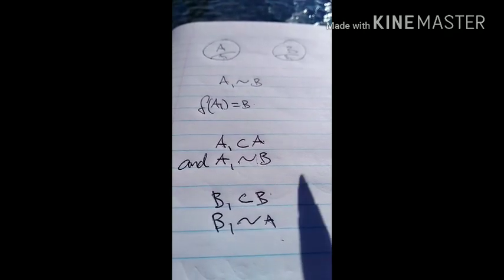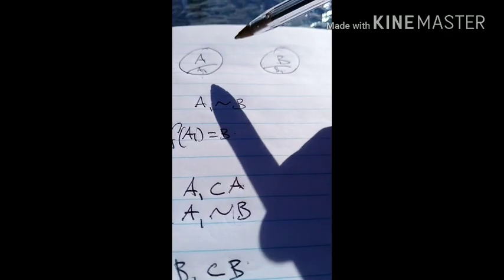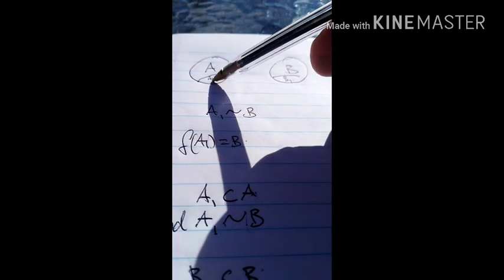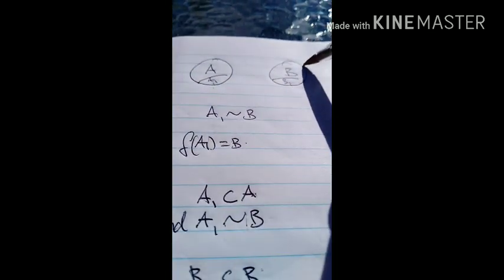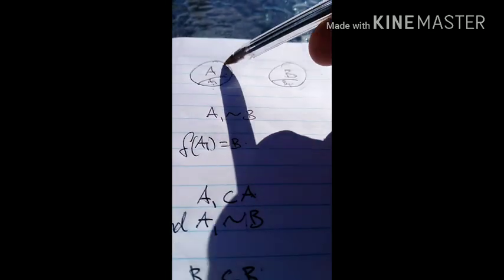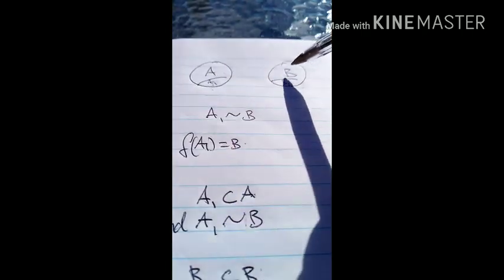Welcome everybody to the Cantor Bursting Theorem. Now let's give it a go. So what we want to say is that we have A1 which is equivalent to all of B, and B1 which is equivalent to all of A, and so we want to prove that A is equivalent to B.